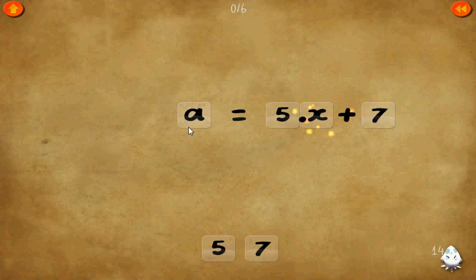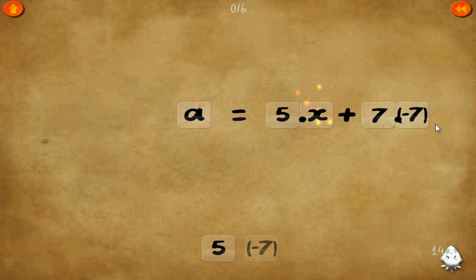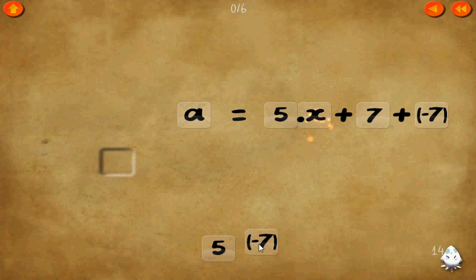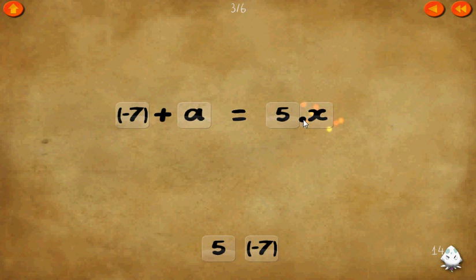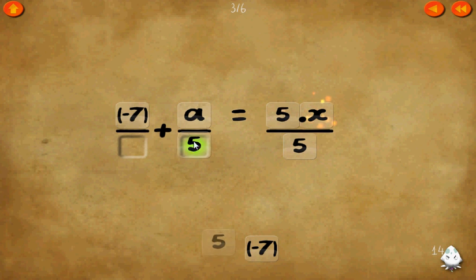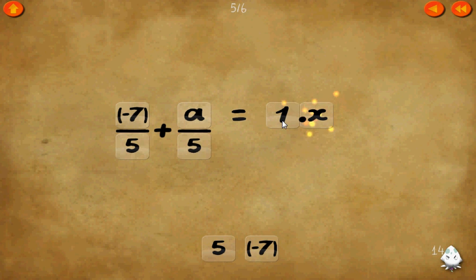We're on Level 14 now. A equals 5 times x plus 7. The easiest way is to get rid of the 7 first by adding negative 7 to both sides. 7 plus negative 7 equals 0. Now we have 5 times x. We need to get rid of the 5, so let's make a common denominator of 5 by dividing every term by 5. Cancel those 5's. 1 times x equals x.